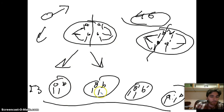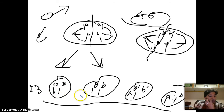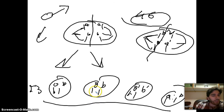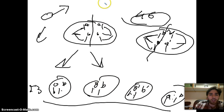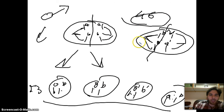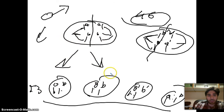This doesn't even account for crossing over, where pieces of homologous chromosomes are exchanged, increasing the number of gamete types by thousands of times more. On top of that, we cannot predict which sperm will fertilize which egg, making it essentially impossible for two siblings to have exactly the same DNA — except for identical twins. All of this contributes to genetic variation and diversity in species that reproduce sexually. This is meiosis; I hope it was clear.